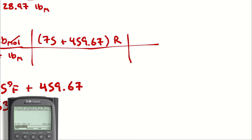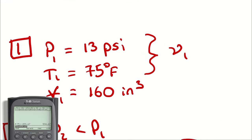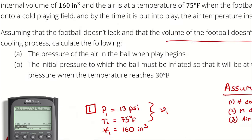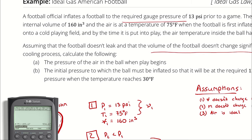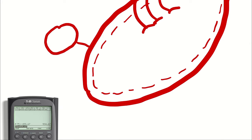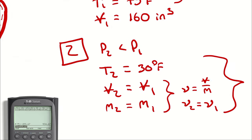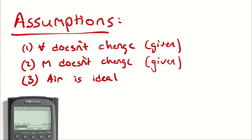Then we divide by the pressure inside the ball, which was described as 13 PSI. But we don't plug in 13 PSI either, because just like temperature, this is a relative pressure. The problem describes the official inflating the ball to a required gauge pressure. That gauge reports the pressure difference between the inside and outside of the football — not the actual absolute pressure. So if we just plugged in 13 PSI we'd be using a relative pressure. To convert to absolute pressure, we have to add atmospheric pressure. I don't know an atmospheric pressure, so I will have to assume one.